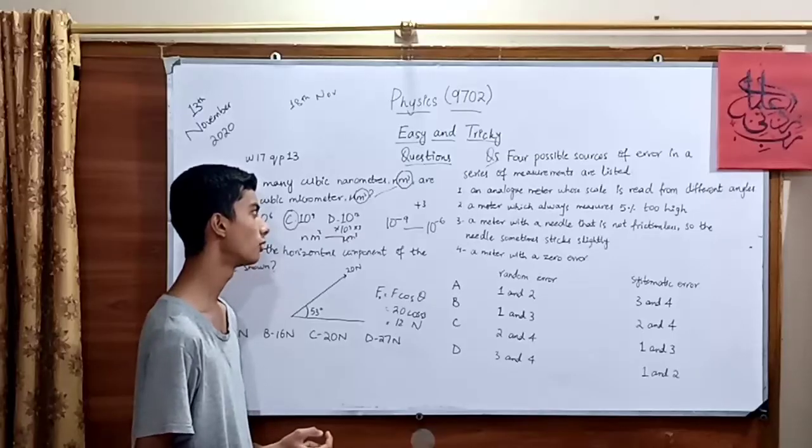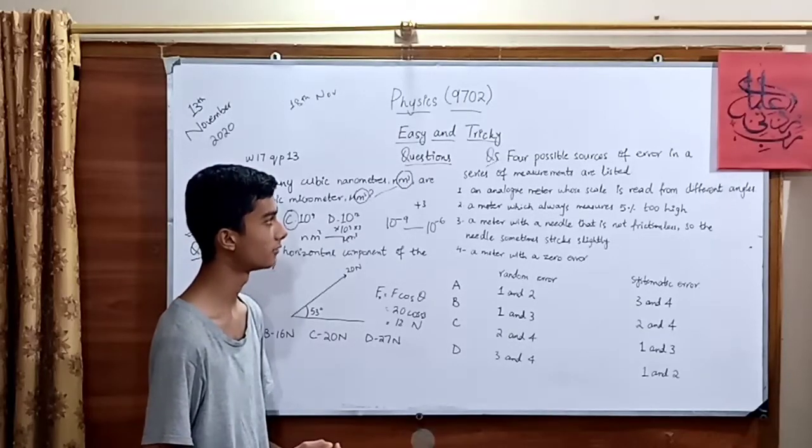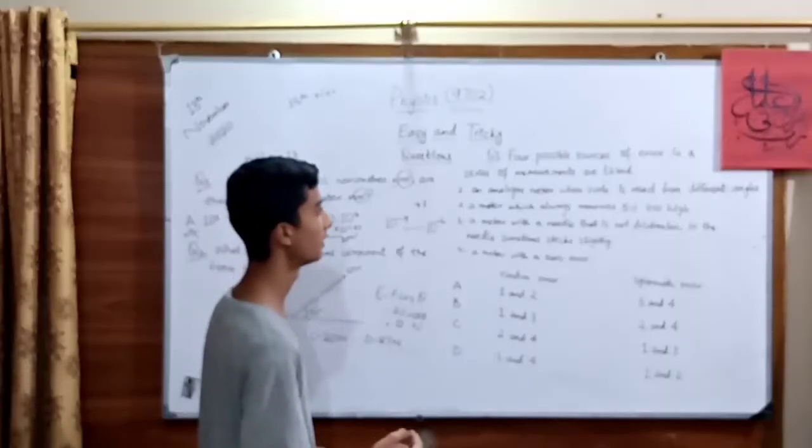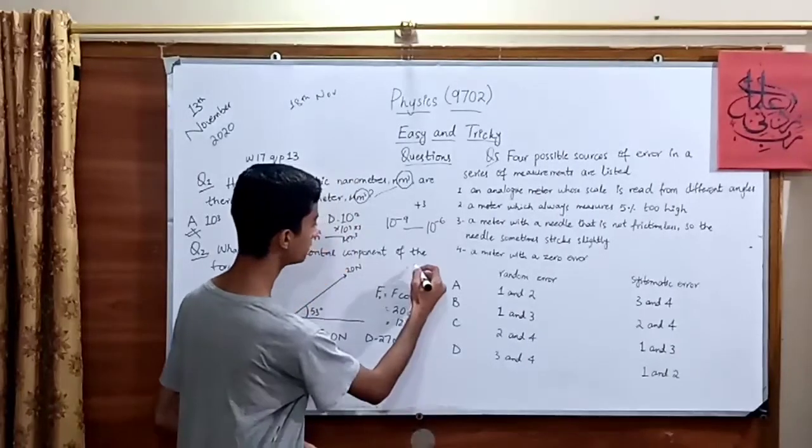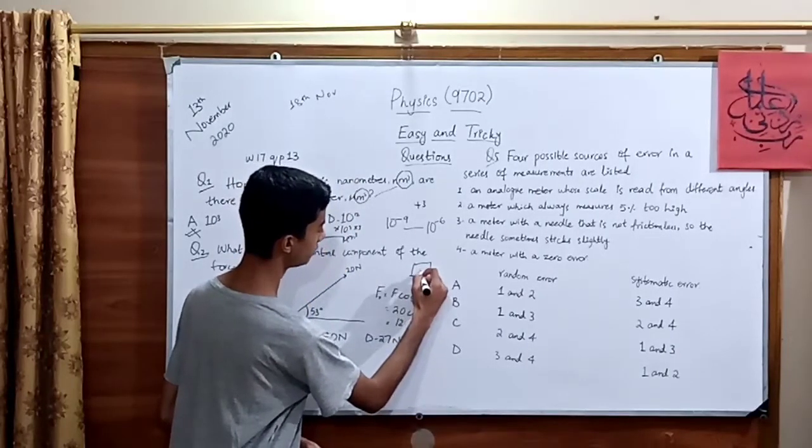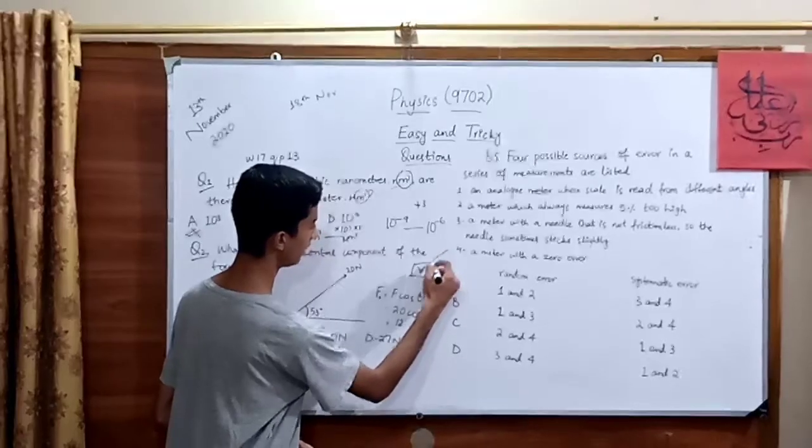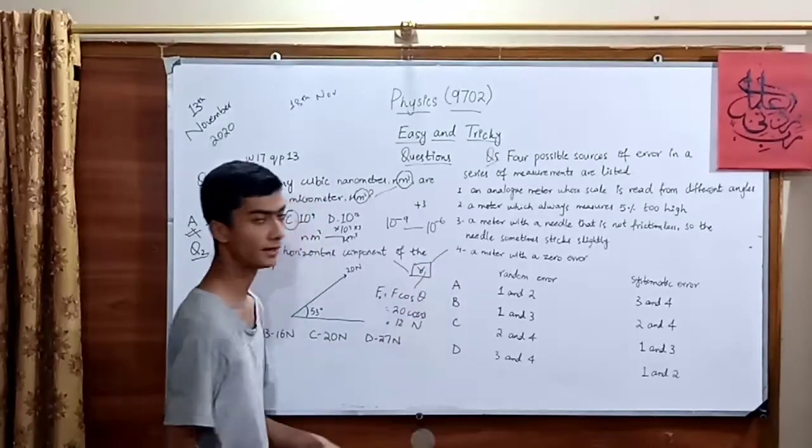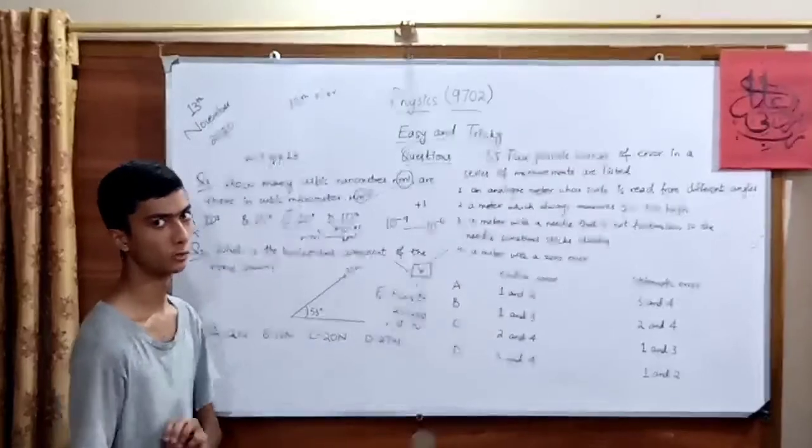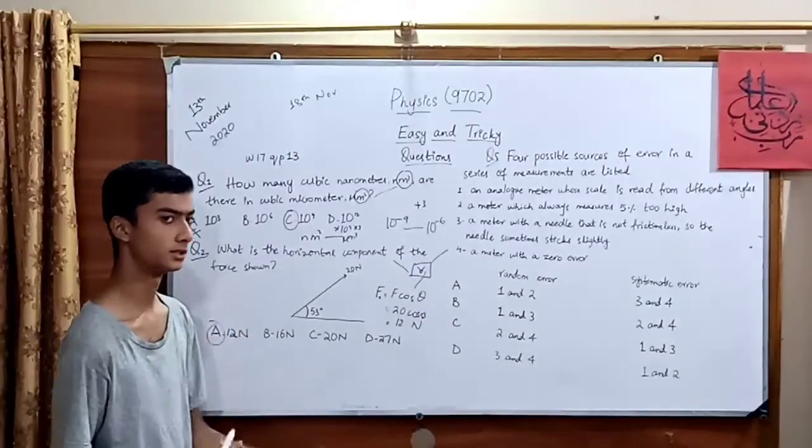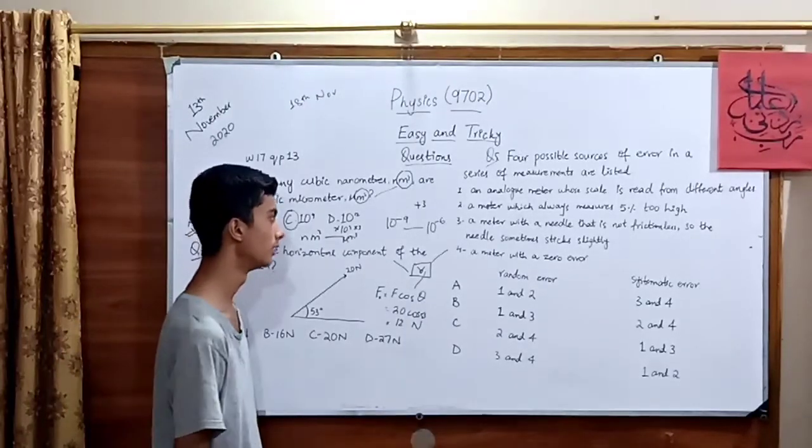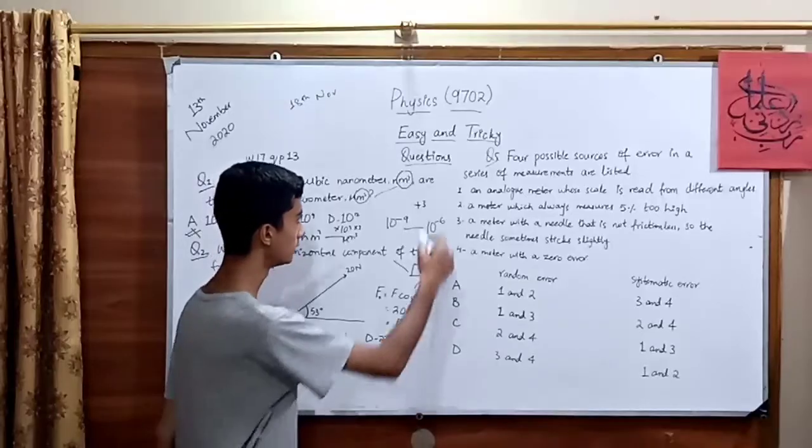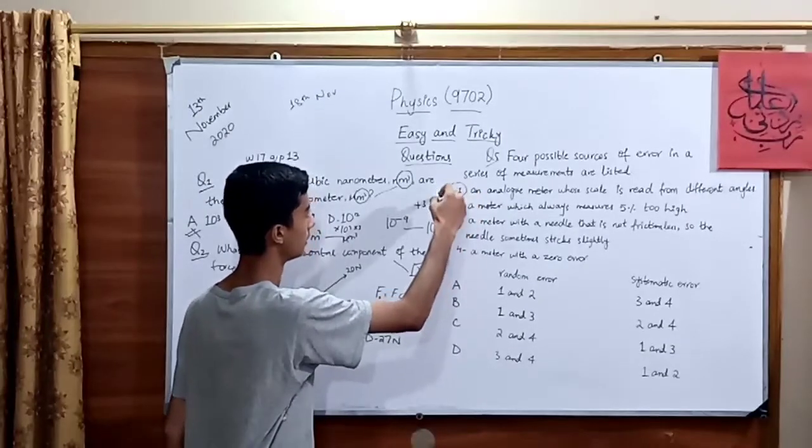For option number 1, we have an analog meter whose scale is read from different angles. It means the meter is placed on one plate and we are going to read it from different angles. So reading from different angles is not systematic error. It could be random error, and random error is caused by human error. So we are considering 1 as part of random error.